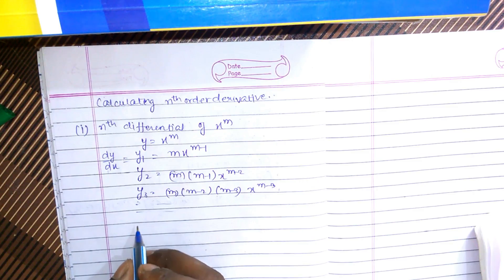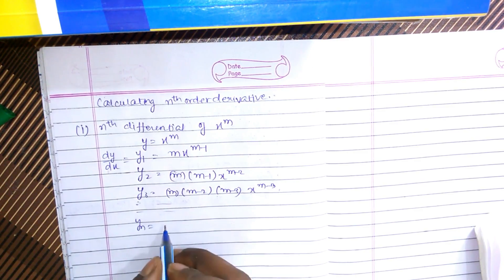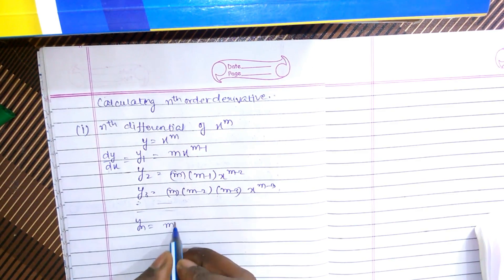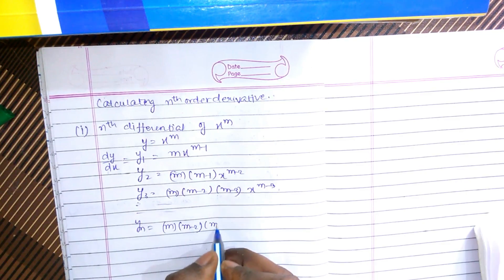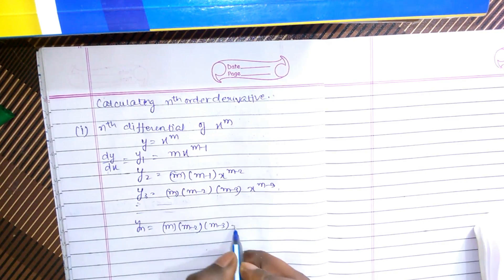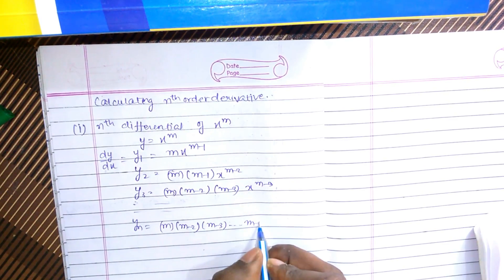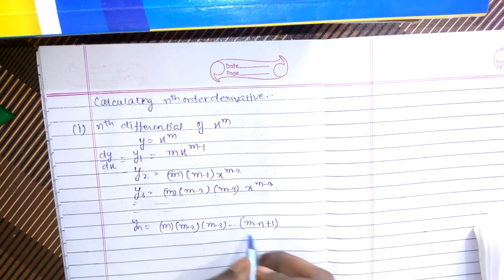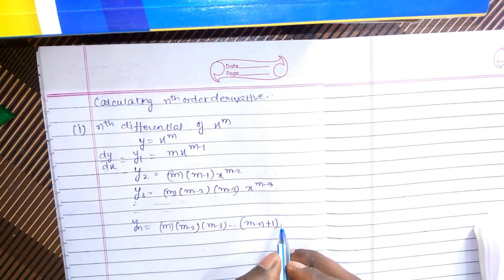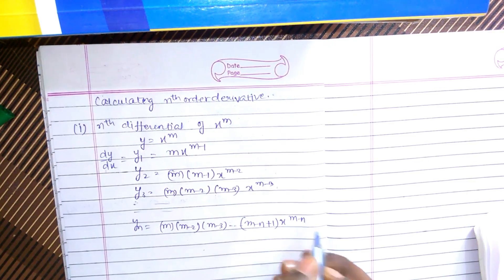So the nth term yn would be equal to m(m−1)(m−2)(m−3)... down to (m−n+1), times x raised to power m minus n.